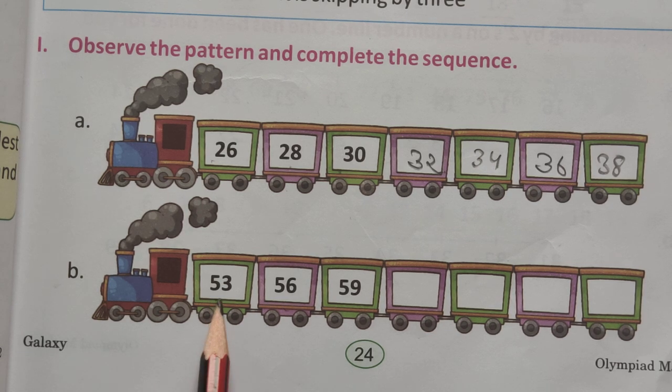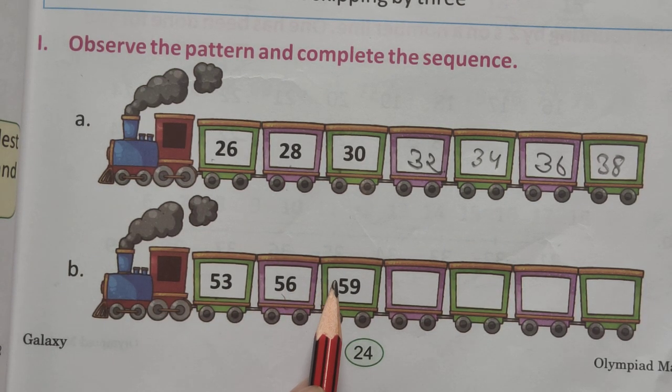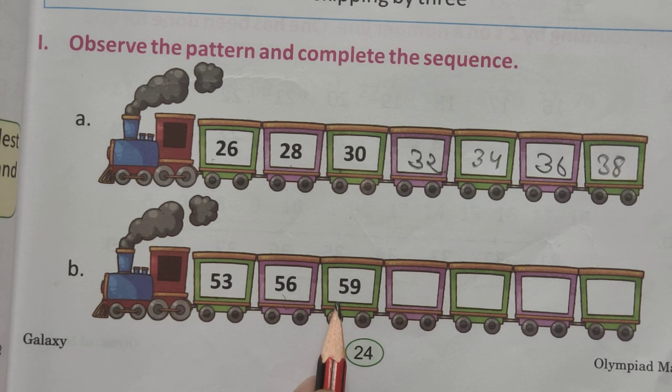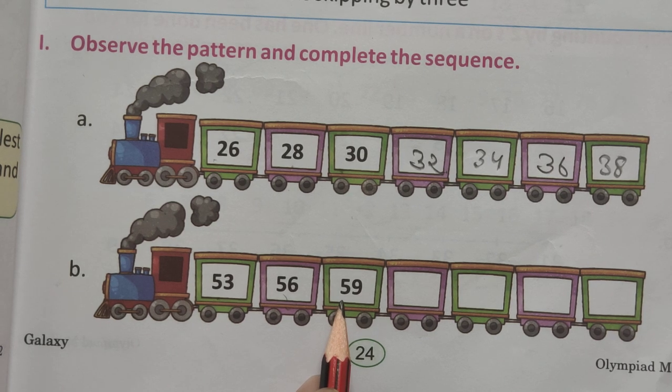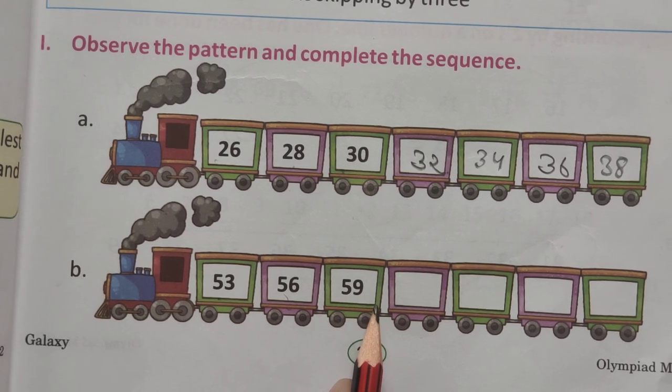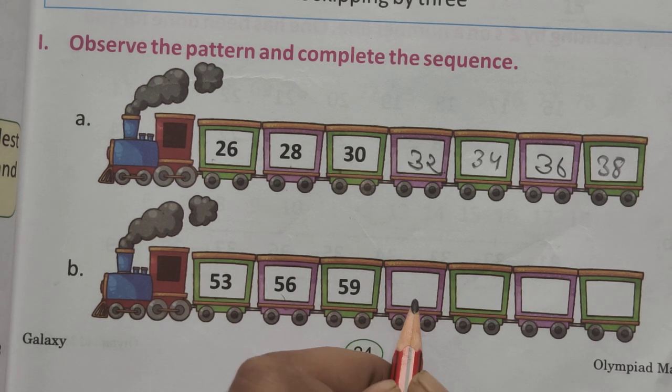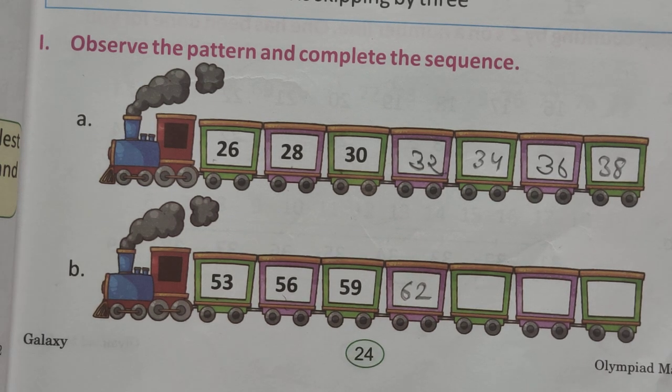56. After that, skip by three, count the number, 57, 58, and 59. Then, after that, by skip three, count. Count the number again, 60, 61, and 62. Is that clear?